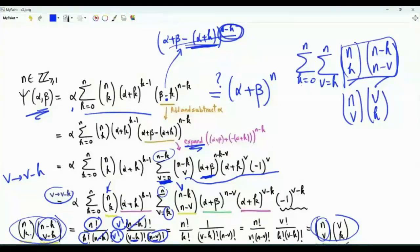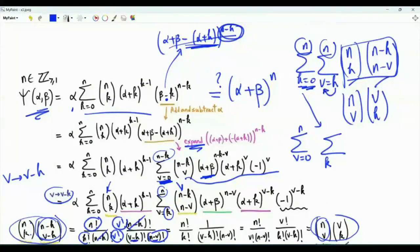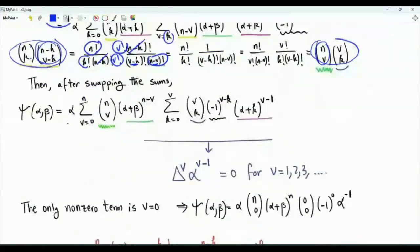We interchange the order of summation. Originally we sum k from 0 to n with v from k to n. Making v the outer index ranging from 0 to n, and k the inner index from 0 to v, epsilon of alpha and beta becomes alpha times summation v from 0 to n, k from 0 to v, with the binomial coefficients n choose v and v choose k, and the remaining terms alpha plus beta to the power n minus v, times minus 1 to the power v minus k, times alpha plus k to the power v minus 1.